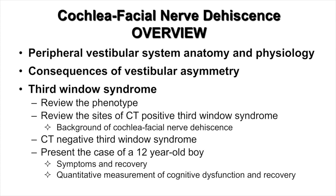As an overview, I will discuss the peripheral vestibular system anatomy and physiology. I will also talk about the consequences of vestibular asymmetries, which will lead to a discussion about third window syndrome — including the phenotype, what patients experience, and what can be measured. I will review known sites of third window syndrome visible on CT scan, provide background on cochlea facial nerve dehiscence, and present the case of a 12-year-old boy who developed traumatic third window syndrome after a snowboarding accident, including his symptoms, recovery, and quantitative measurement of cognitive dysfunction.